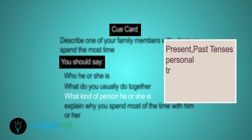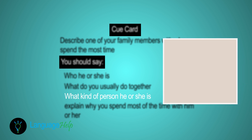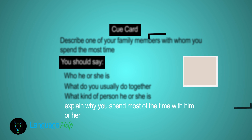The third cue asks us to talk about what kind of person he or she is. Here we're going to have to describe the person, so we'll need the present tense. But I'm also thinking of talking about an example that happened in the past to further the description, so I'll use past tenses too. I need vocabulary like 'sociable' and 'kind-hearted,' and a past example.